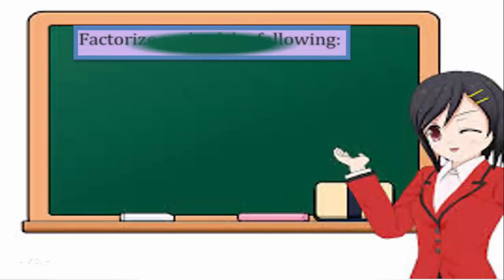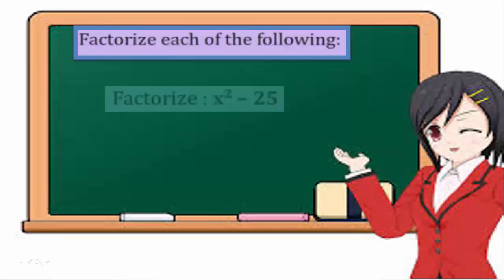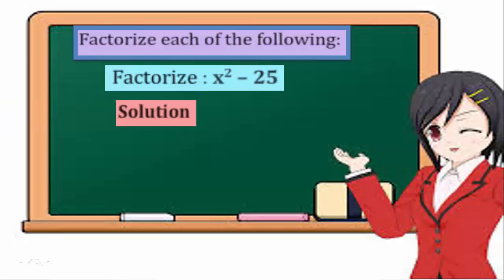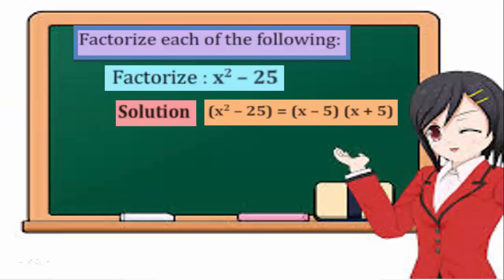Factorize each of the following. Example 1: Factorize x squared minus 25. Solution: x squared minus 25 equals a bracket of x minus 5 times a bracket of x plus 5.